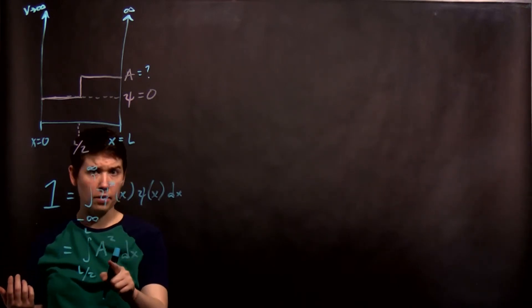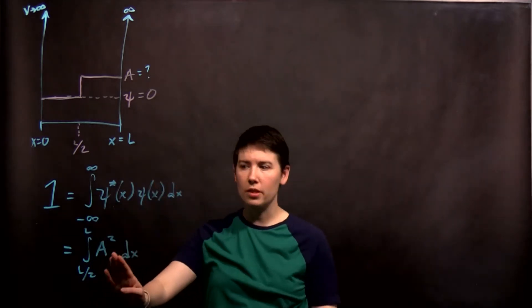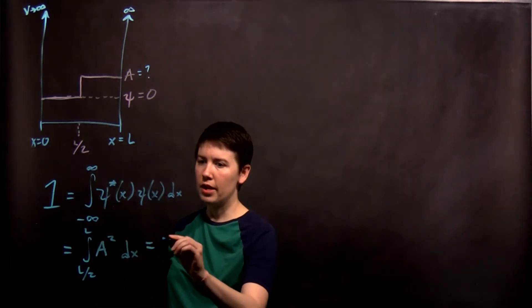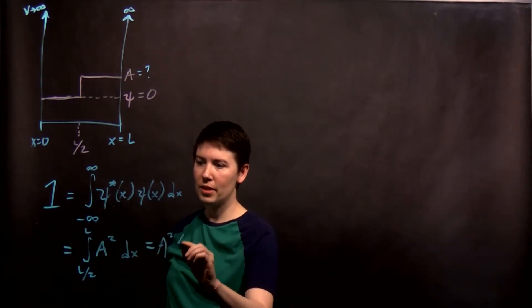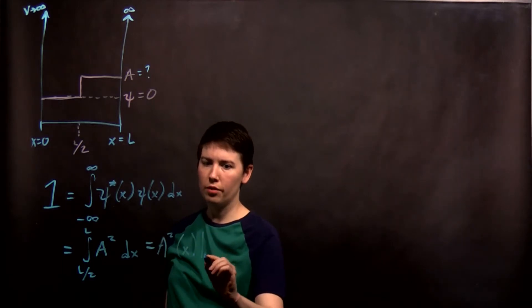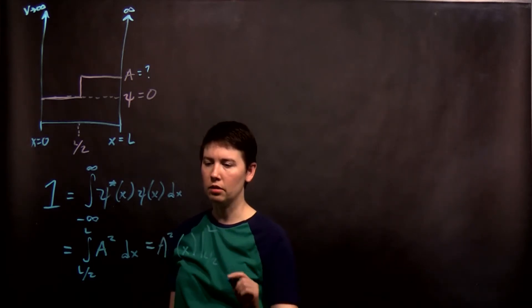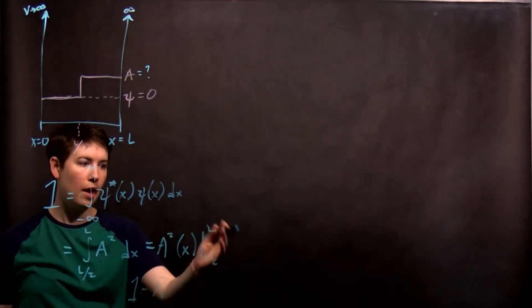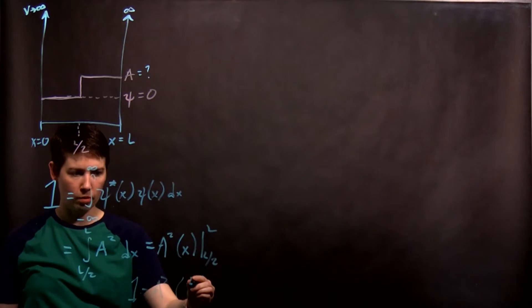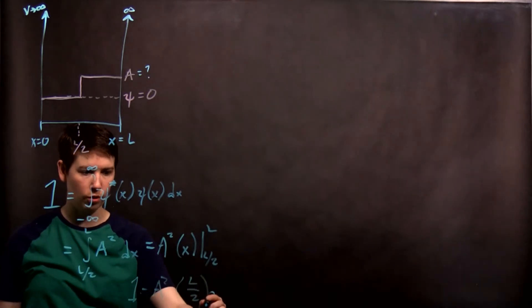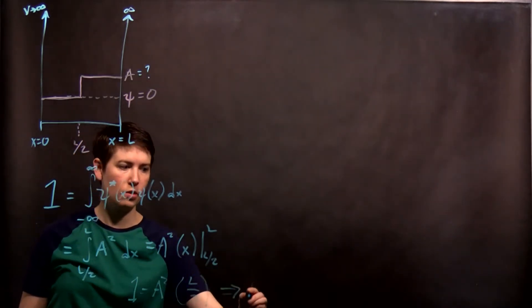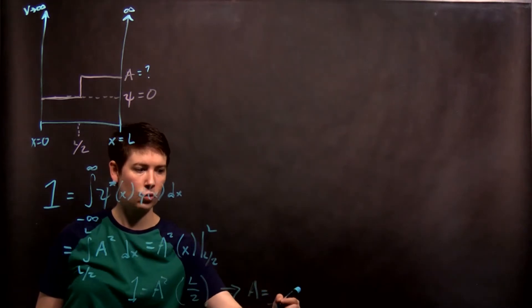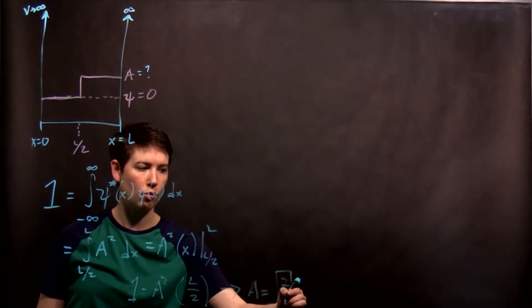Well, so when I integrate that, this A is just a constant. And so then I have A squared and then basically x evaluated from L over two to L. So then what I'm left with is one equals A squared L minus L over two is L over two. So what that means is A equals square root of two over L.